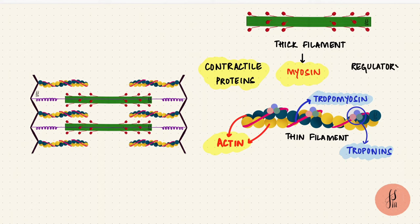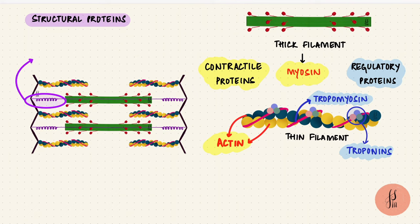Tropomyosin and troponin form the regulatory proteins. These are the most important proteins, but there are other structural proteins or accessory proteins as well. There are lots of them with lots of different names, like titin. This attaches myosin to the Z-disc. It's like a spring, so it stabilizes the position of myosin in the sarcomere.